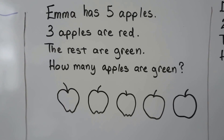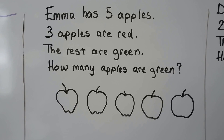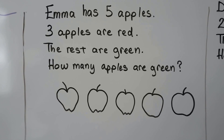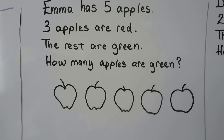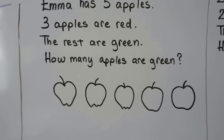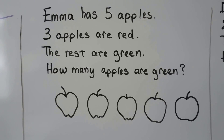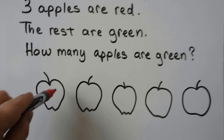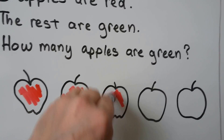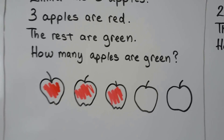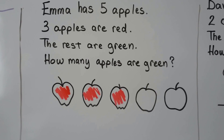Emma has five apples. Three apples are red, the rest are green. How many apples are green? We can make five apples and we can color three of them red. That means the rest would be green.